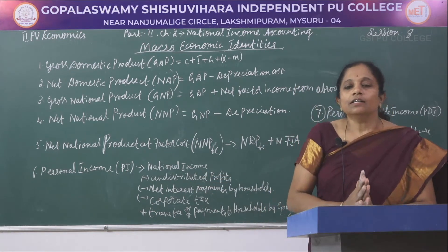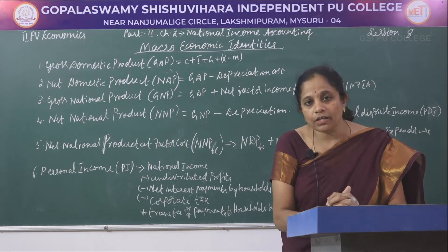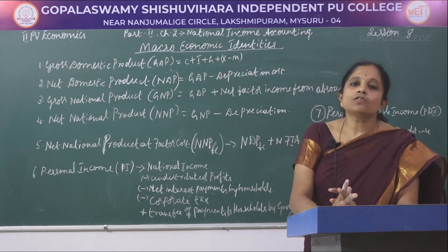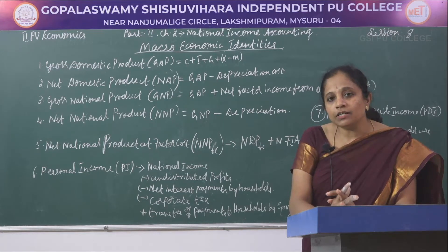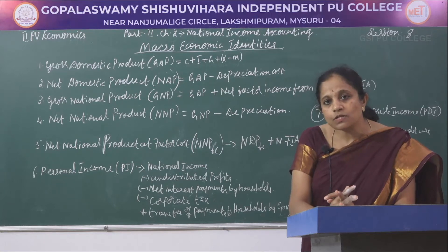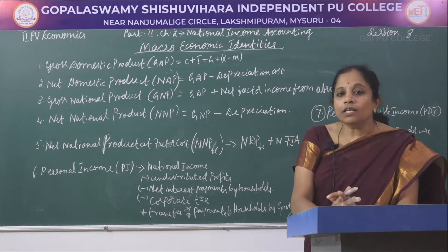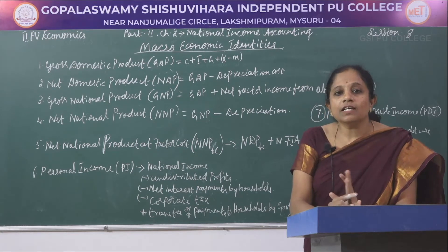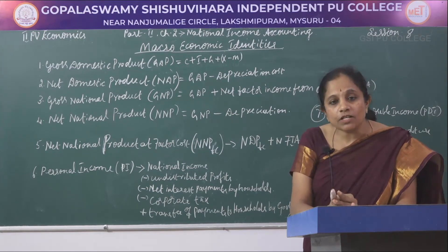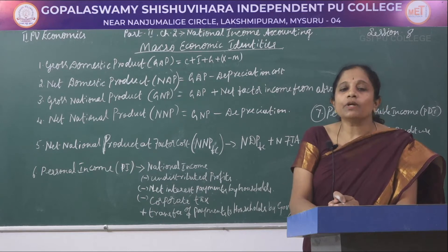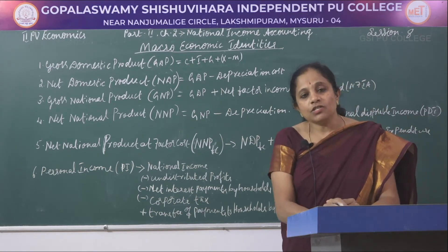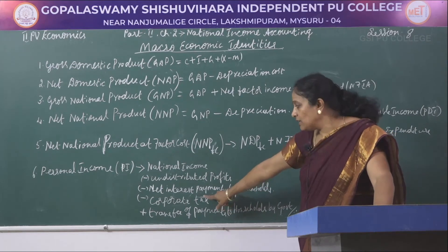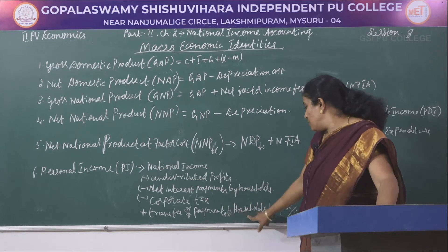The third deduction is corporate tax. Corporate setups have spread everywhere — multinational companies, BPOs, KPOs, and corporate structures in hospitality, education, infrastructure, and services. These pay taxes to local government, and those corporate taxes are deducted. There is also one addition: transfer payments to households by government.